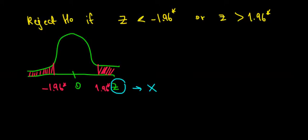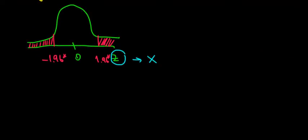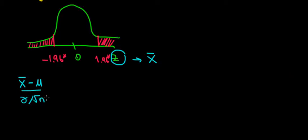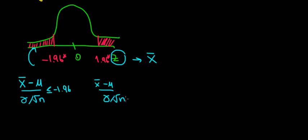To do that, we take into account that these are standardized values, meaning the average value of x (the sample mean) minus the population mean, divided by the standard error — which is the standard deviation divided by the square root of n — must be less than or equal to minus 1.96 to be in the left rejection region, and greater than or equal to 1.96 to be in the right rejection region.